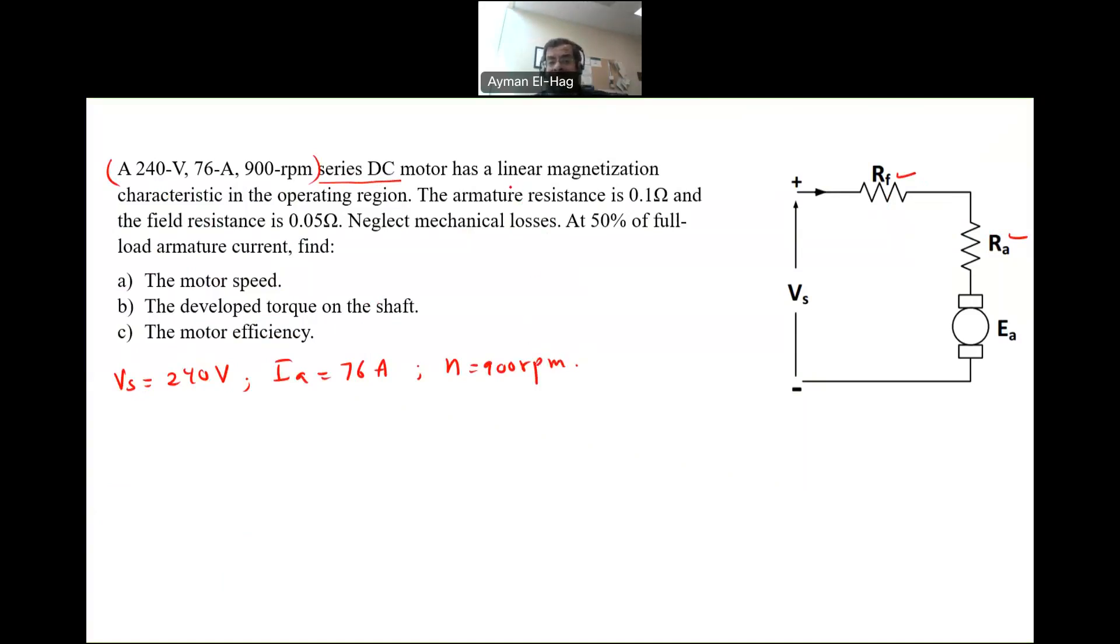The motor has a linear magnetization characteristic. What does this mean? It means that the flux is proportional to Ia, because it's exactly the same thing. The armature resistance is 0.1 ohm, and the field resistance is 0.05 ohm, and this is your Ia, of course.